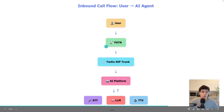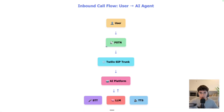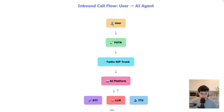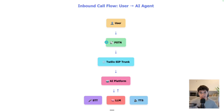This is essentially how the flow works when someone is making a phone call to our number all the way to our AI platform. We have the user making a phone call using their phone number to a phone number. That phone number is stored in what we call a PSTN network — essentially a big network of all these phone numbers, an old advanced system using satellites to make the connection around the world.